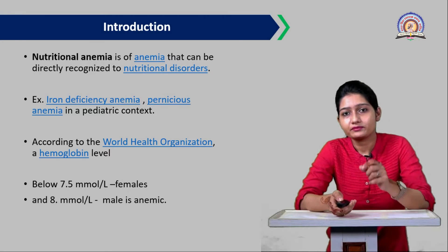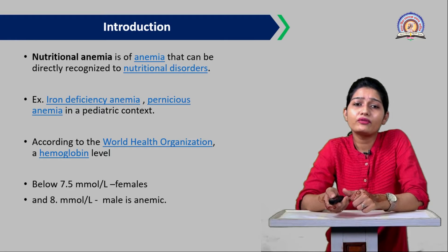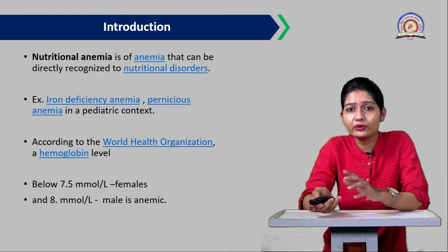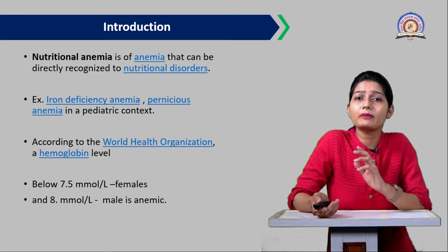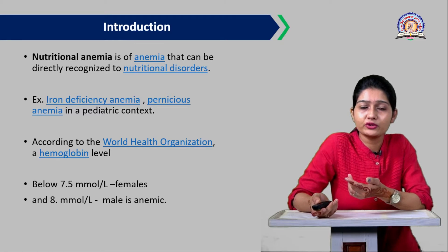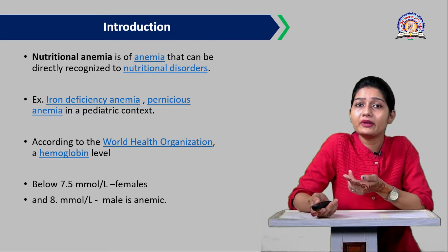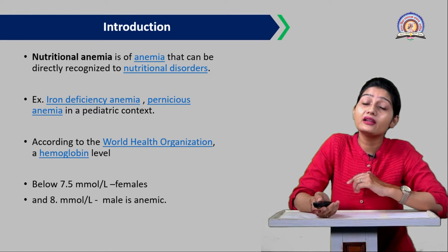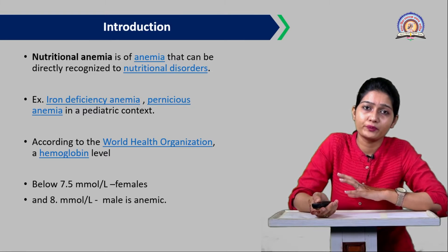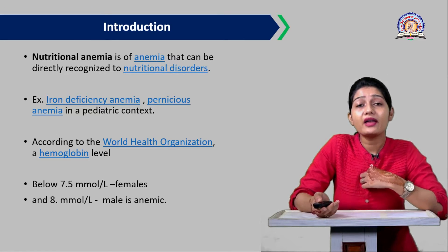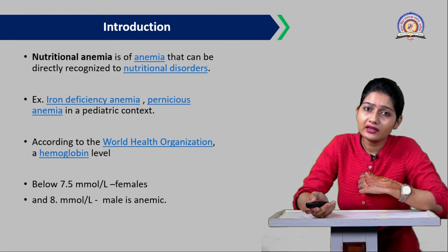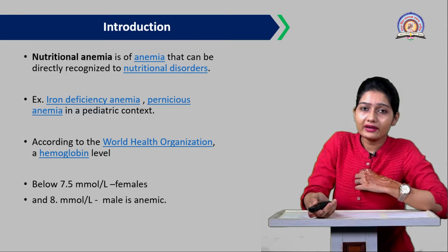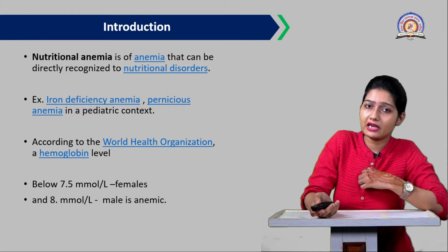Nutritional anemia is a type of anemia that can be directly attributed to nutritional disorders. Nutrients are micronutrients and macronutrients. Iron is a micronutrient, like vitamin A, but its deficiency can cause major disorders that affect our health and in later stages may cause death. Examples of nutritional anemia include iron deficiency anemia and pernicious anemia, which can occur in adults, while in children it is called pernicious anemia.